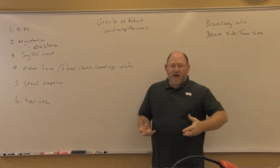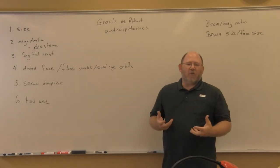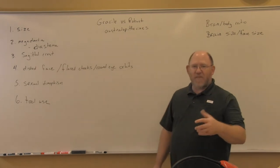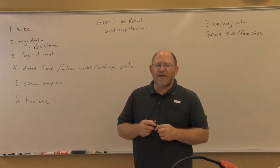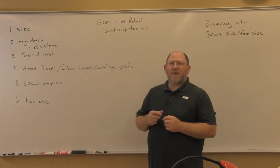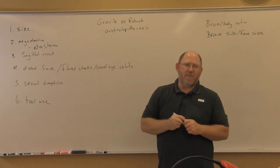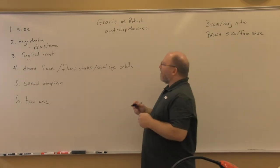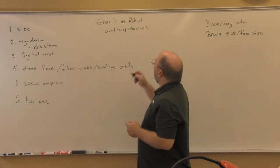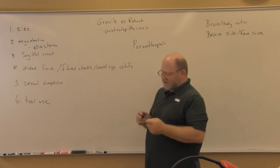Gracile simply means that it's more lightly or thinly built. Robust is more largely built. One of the debates in the discussion between robust versus gracile australopithecines is whether we call both of them by the genus Australopithecus. There is a growing consensus in the anthropological and scientific community that the robust form will be called by the genus Paranthropus.